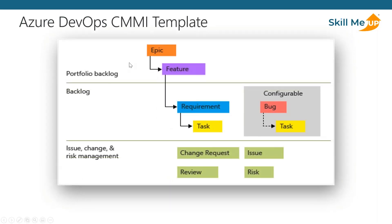The CMMI template is typically used in Azure DevOps projects that have change management and risk management applied — it's a more developed process. Teams new to Azure DevOps will typically start with Agile or Scrum because those map so well to lightweight team interaction. But it's important to know that the CMMI template is here because CMMI and ITIL processes are commonly used in larger, more developed teams. As your team grows and change and risk management requirements grow, this may be a template you can evolve to.